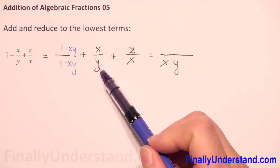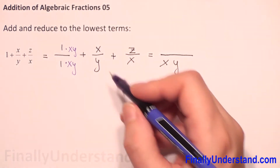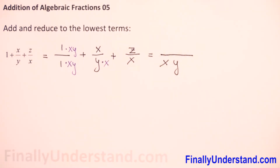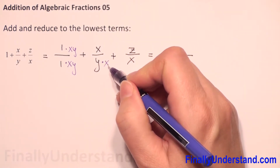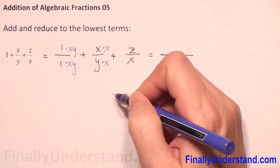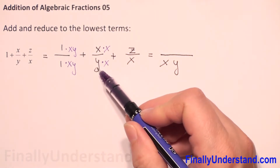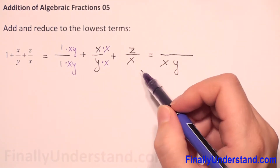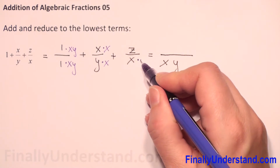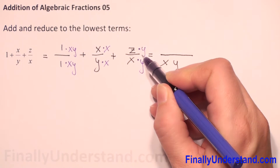The next algebraic fraction has y in the denominator. I need xy, so I have to multiply this denominator by x to get xy. If I multiply the denominator by x, I have to multiply the numerator by x as well. Now y times x is xy. And for the last fraction, which has only x in the denominator, I have to multiply by y — both the denominator and the numerator.